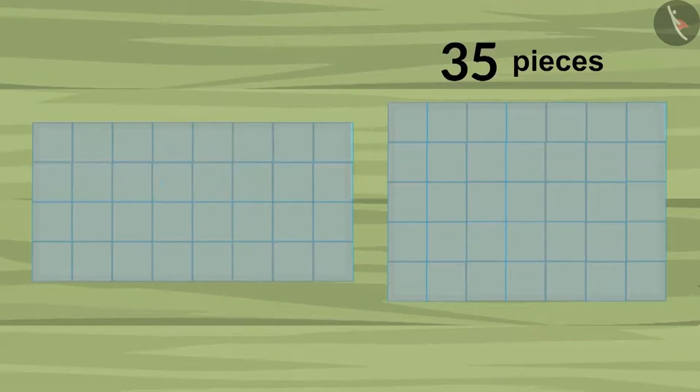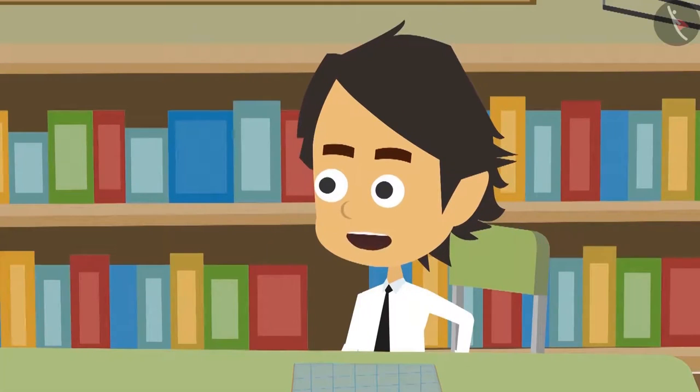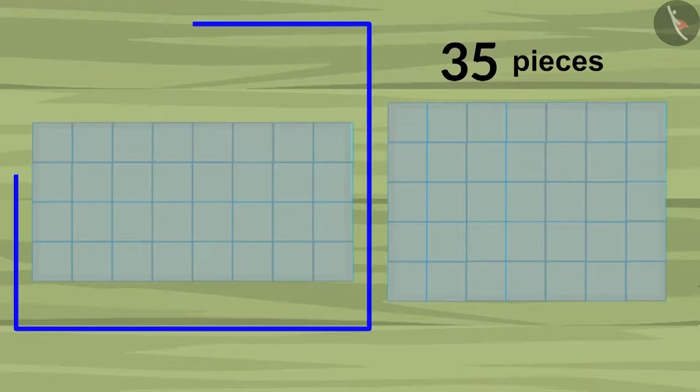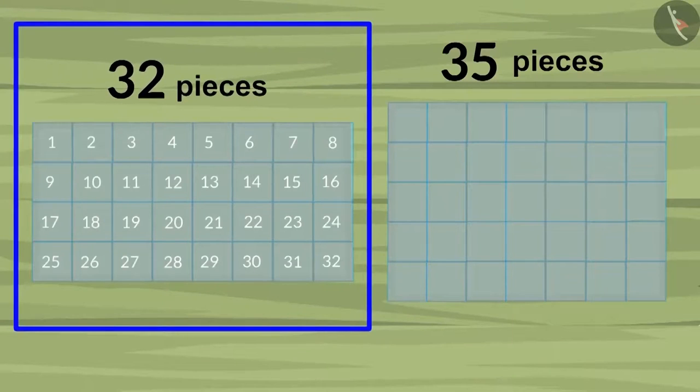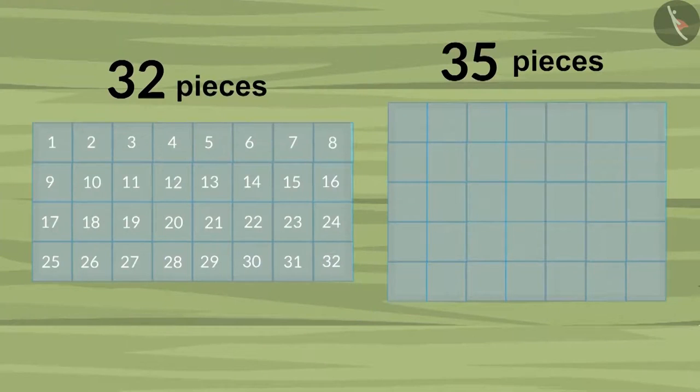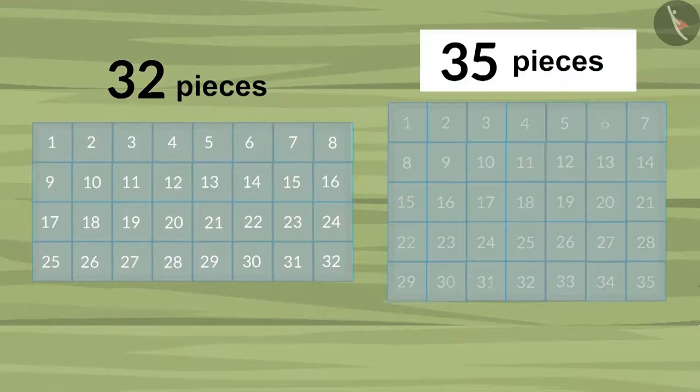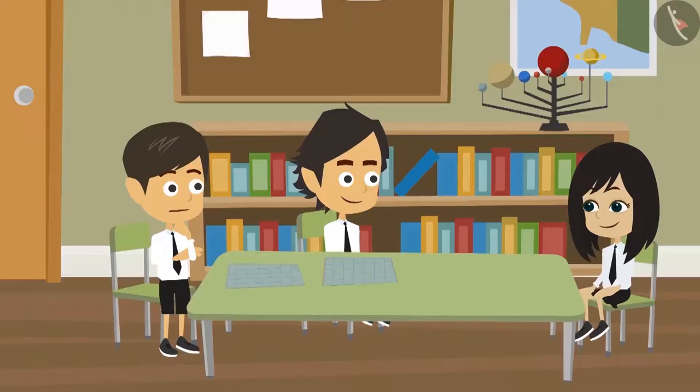Okay, yes, now the pieces are placed correctly. Now, you can tell the correct measurement. 32 pieces were required to cover my cardboard, whereas 35 pieces were required to cover Ayushman's cardboard. This means that my cardboard is small.